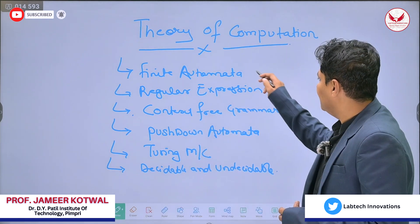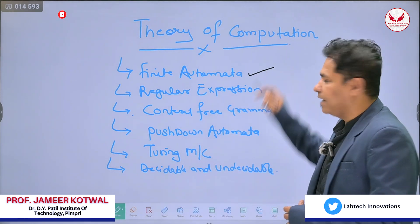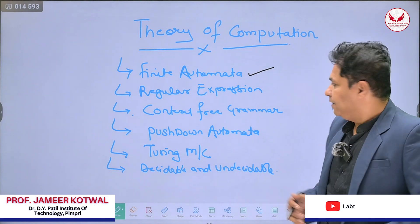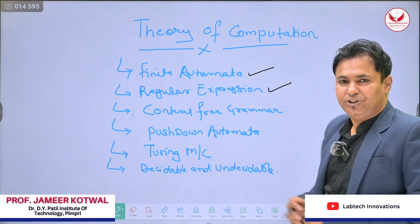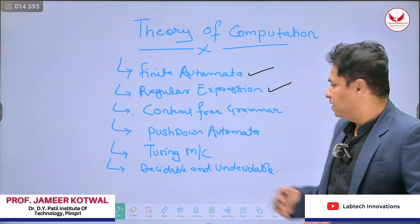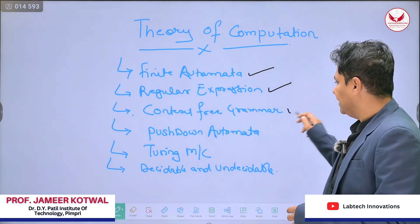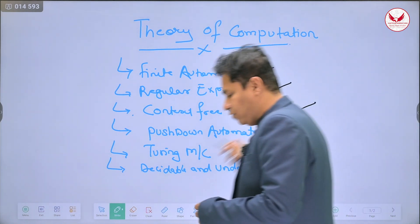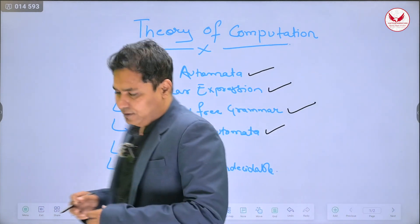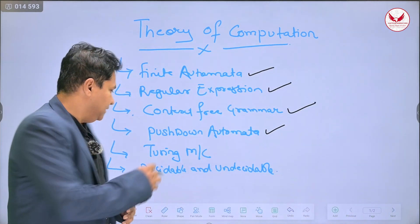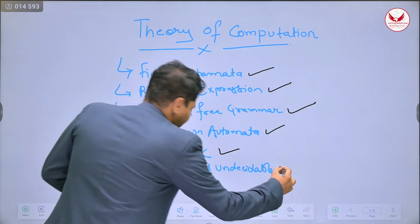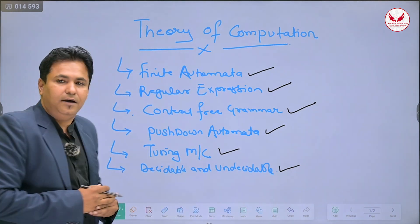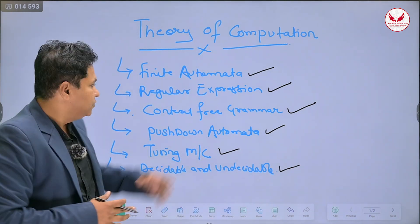The first content is finite automata. Second is regular expression. Third one is context-free grammar. Next one is pushdown automata. Second last is Turing machine. And the last one is the decidable and undecidable concept.